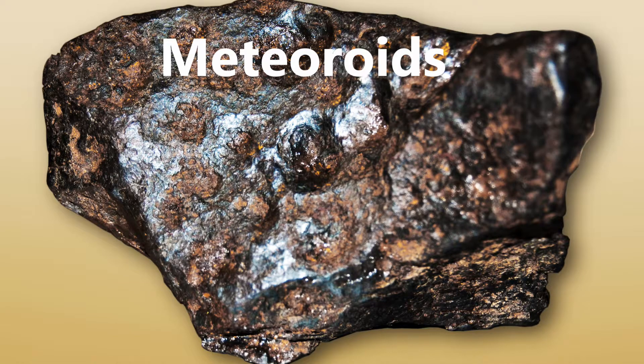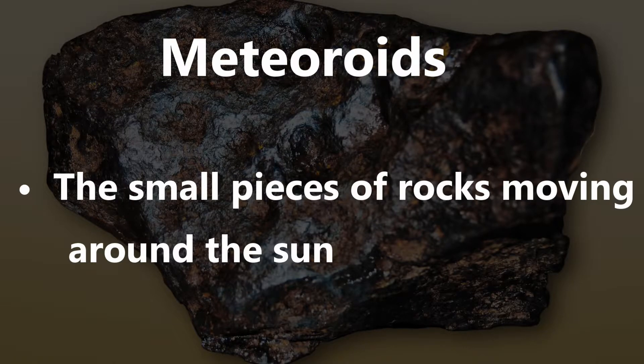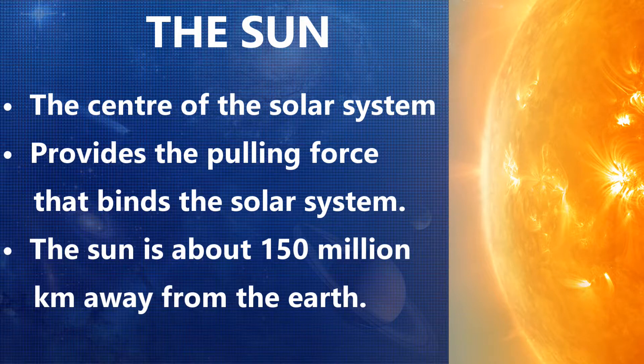Meteoroids are small pieces of rocks which move around the Sun. Though meteoroids tend to drop on the Earth, due to friction of the atmosphere, most of them get burned up.